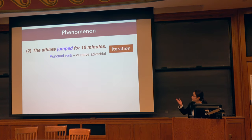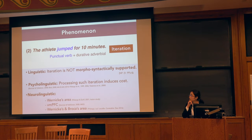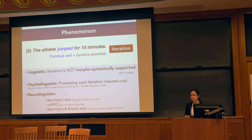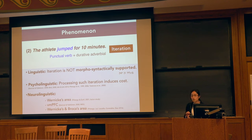Sentences like two with unstated iterative meaning exhibit the following properties. Linguistically, the iteration is not morphosyntactically supported — it is not specified by any words in the sentence, nor by the syntactic structure. Psycholinguistically, previous studies have shown that comprehending such sentences is more costly during real-time comprehension, and is associated with localizable brain activity in Wernicke's area and Broca's area.